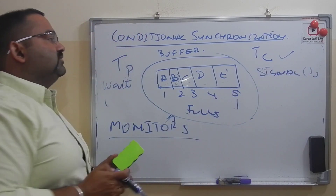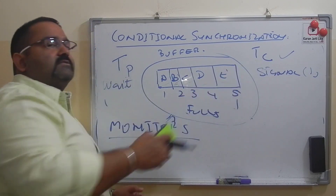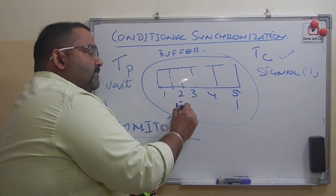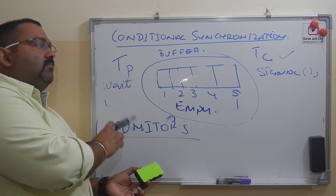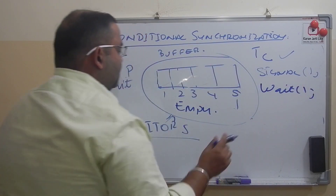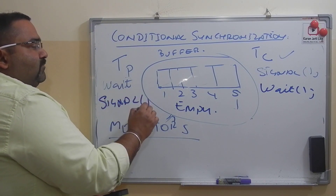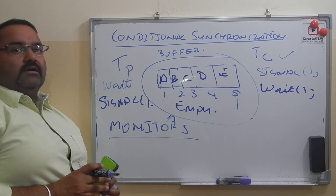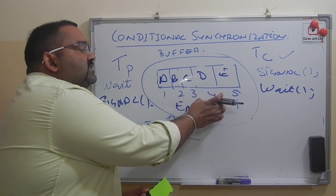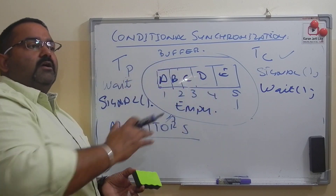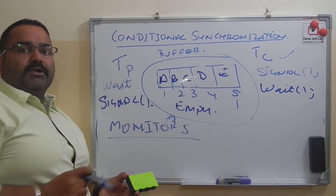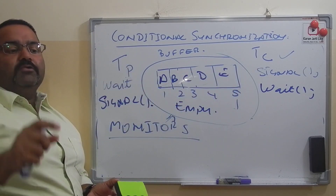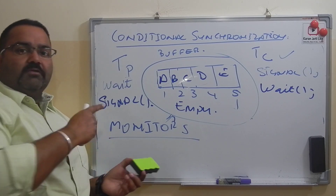After the consumer thread runs, it changes the condition of the buffer — making the buffer empty. Then the monitor tells the consumer to wait and sends a signal to the producer to start filling the buffer again. Monitors control access to the buffer by both threads — who will run and who will wait is decided by the monitor. Depending upon the condition of the buffer, the monitor lets one thread run and puts the other in a wait state.